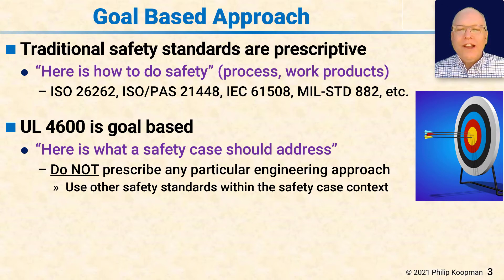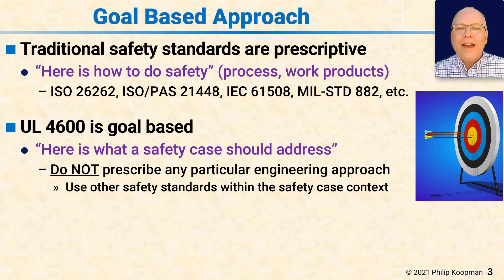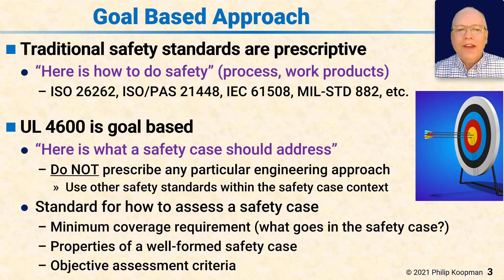As we'll see later, for example, it says you have to have a list of all the hazards that matter, but you can use pretty much any reasonable way to get there. So that means this can work with other safety standards, and the work products from those other safety standards are incorporated into 4600 as part of the safety case.